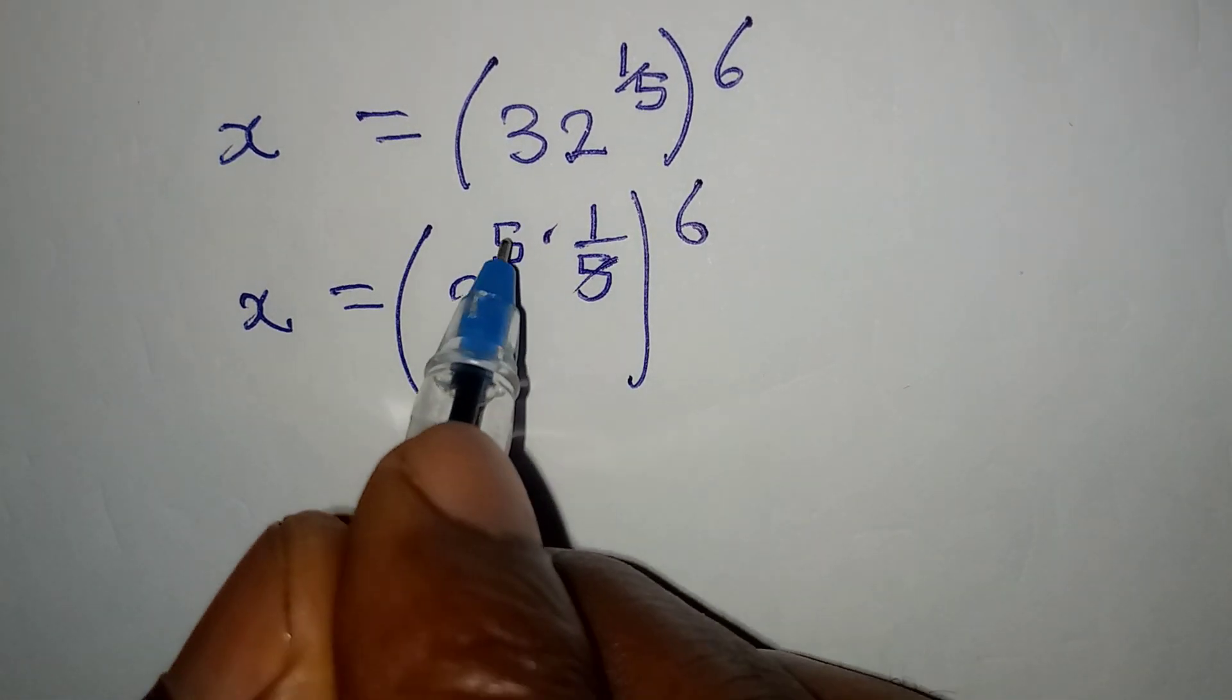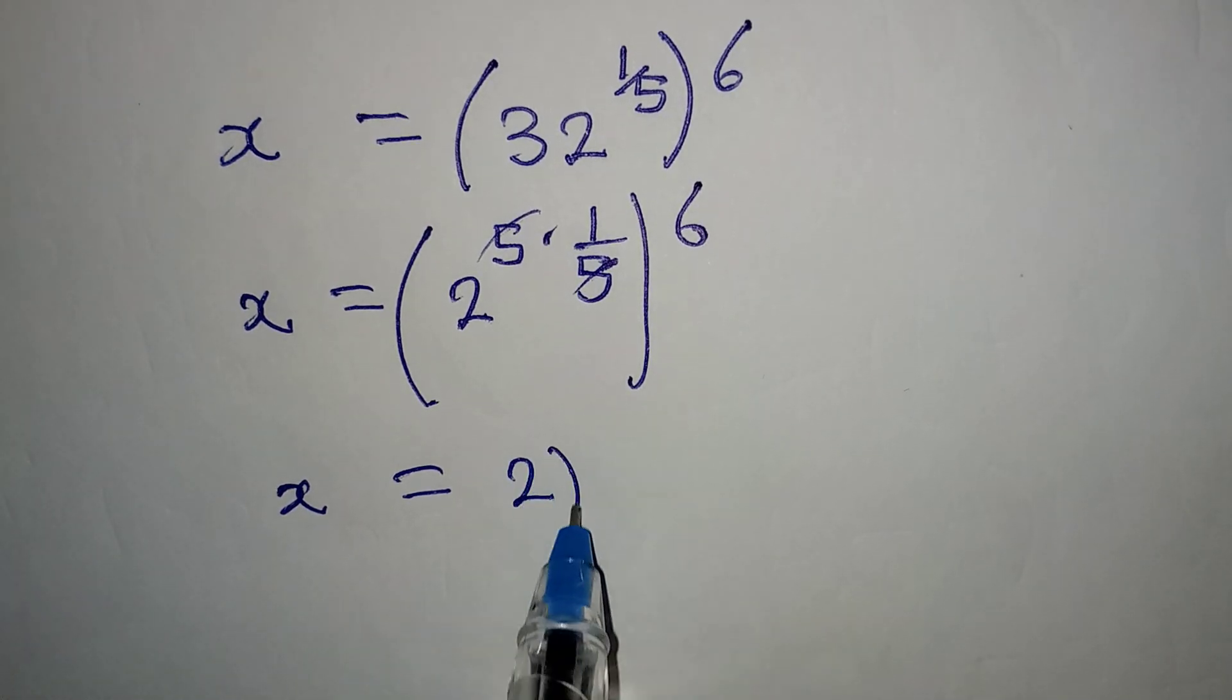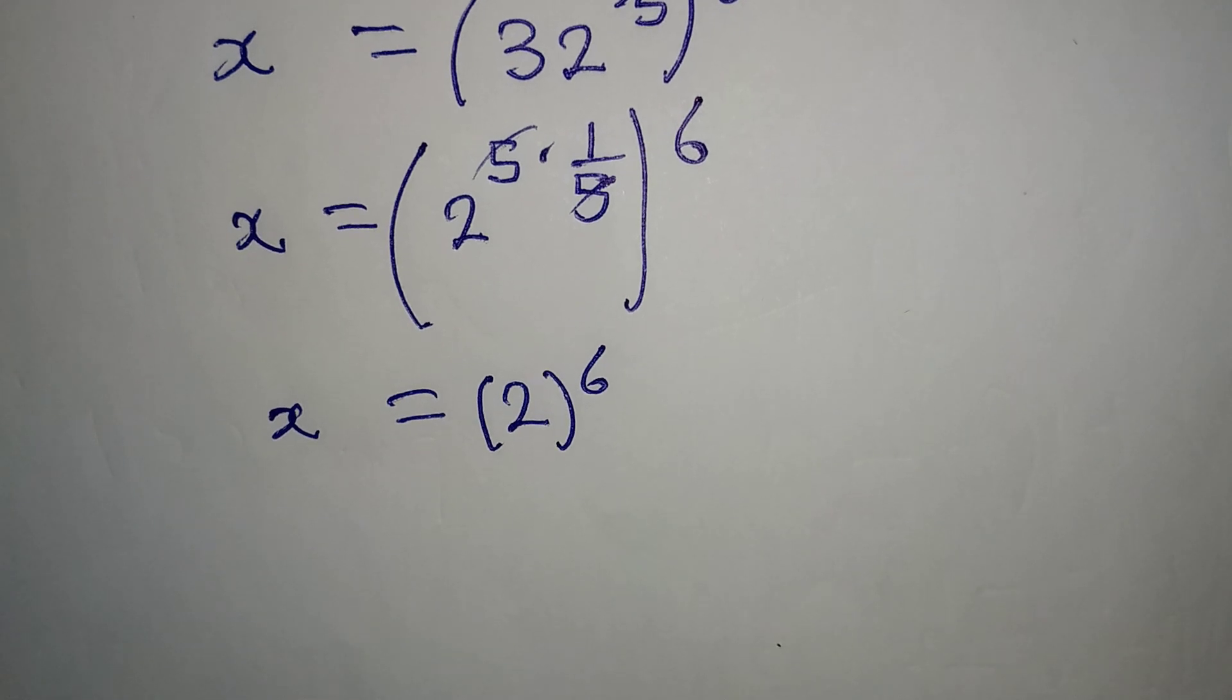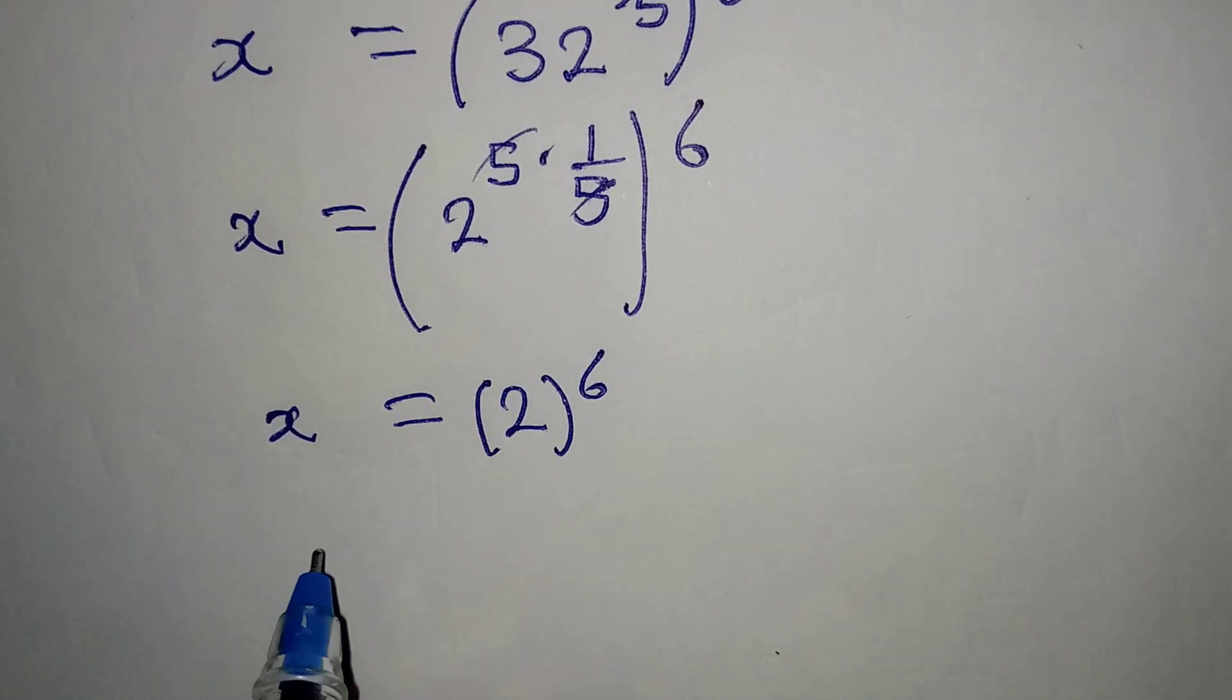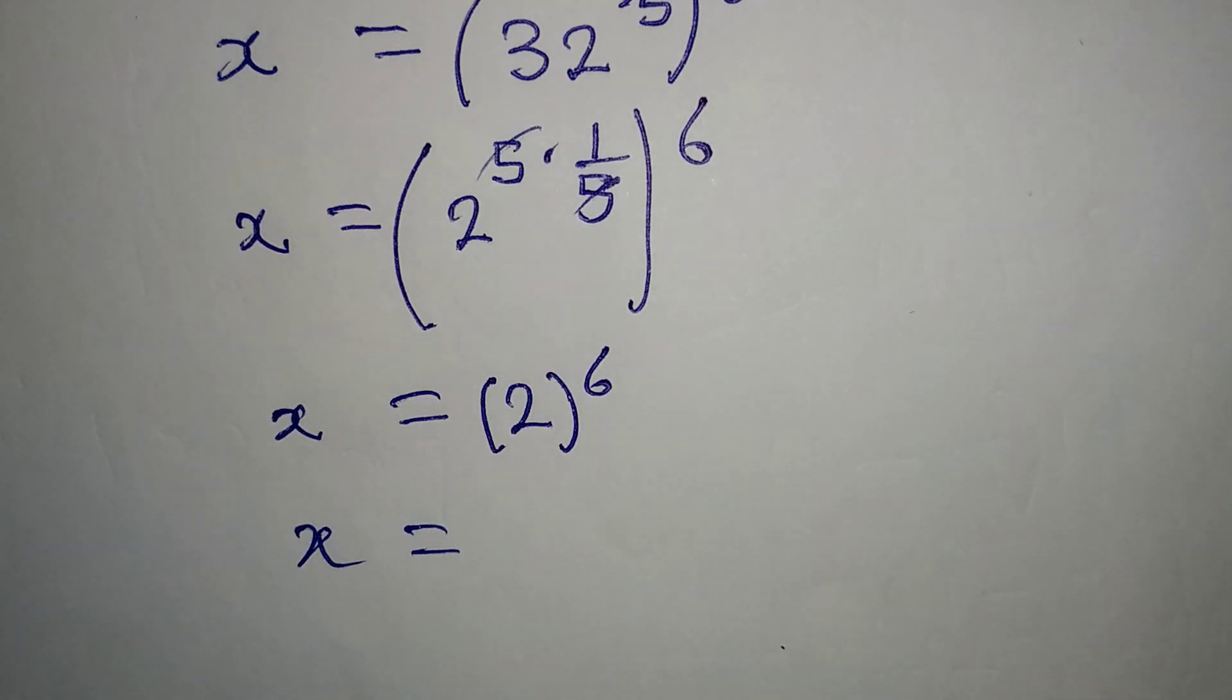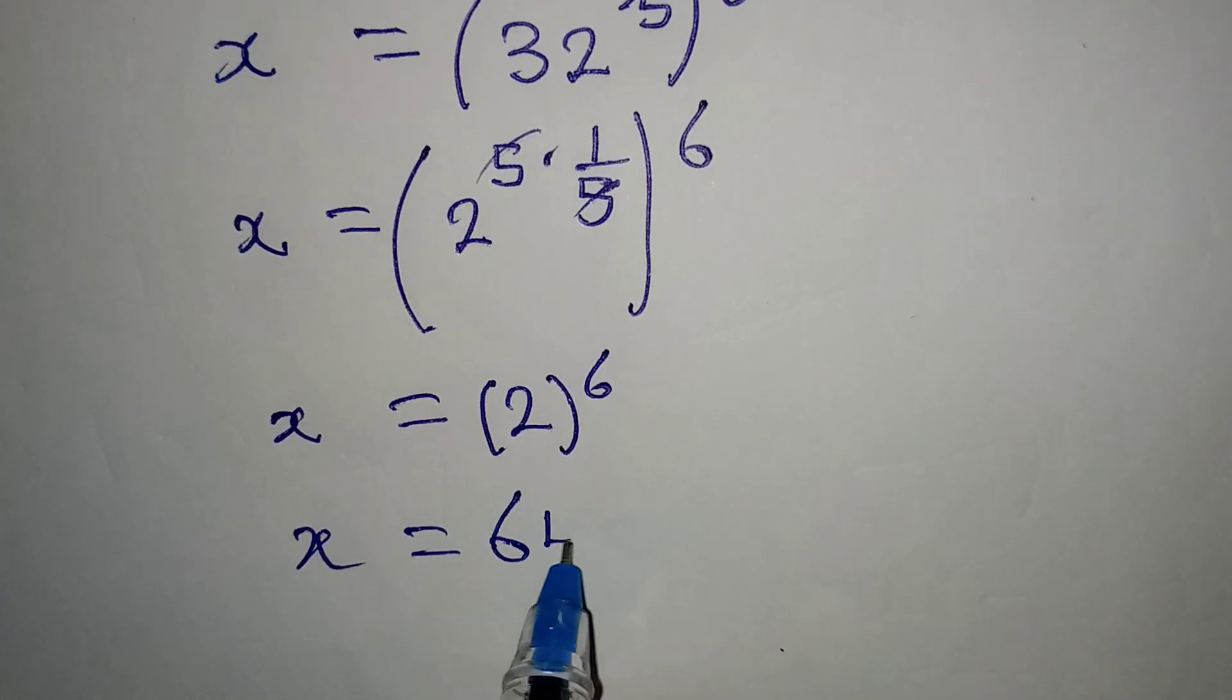Now this will go with this. This means that we are having x to be equal to 2, and then we have the power of 6 outside. But then what is 2 to the power of 6? 2 to the power of 6 will be equal to 2 multiplied by itself in 6 places, and that is going to give us 64. So our x is equal to 64.